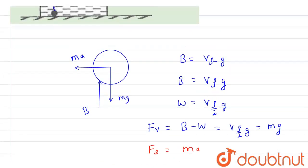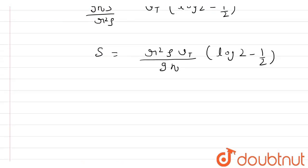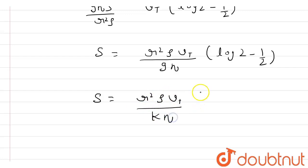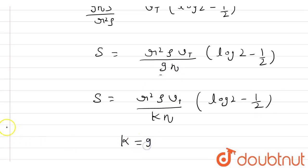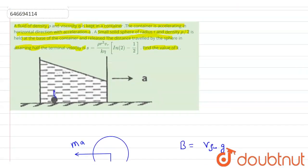Solving for s: s equals r²·rho·vt/(9·eta) times (ln2 minus 1/2). Comparing this with the given expression s equals rho·r²·vt/(k·eta) times (ln2 minus 1/2), we can clearly see that k equals 9. So the value of k is 9.